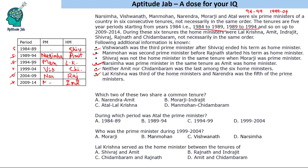Since Shivaraj was not in the same tenure as Murarji, and Shivaraj is confirmed as home minister in tenure 1, Murarji cannot be PM in tenure 1 — so Murarji is placed in tenure 2. The one remaining prime minister, Atal, was therefore the prime minister from 1984 to 89 (tenure 1). With the complete table, we can now answer the questions: Murarji and Indirjeet share a common tenure; Atal was PM from 1984 to 89; the PM during 1999 to 2004 was Vishwanath; and Lal Krishna as home minister served between Shivaraj and Amit/Chidambaram.